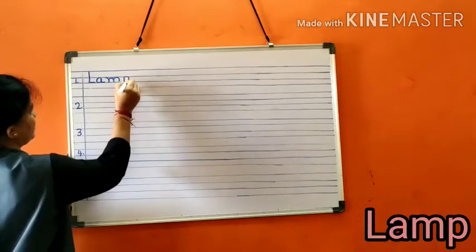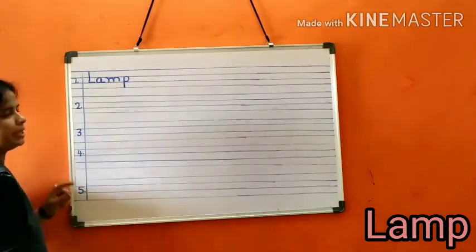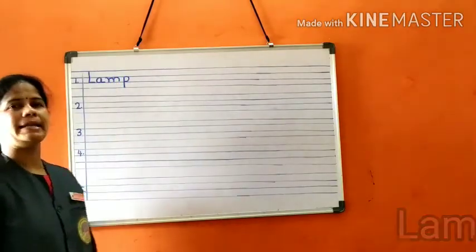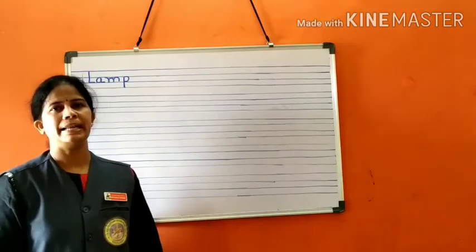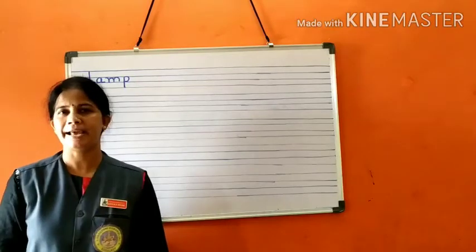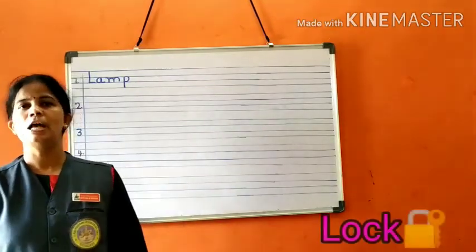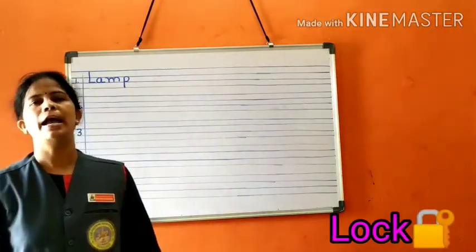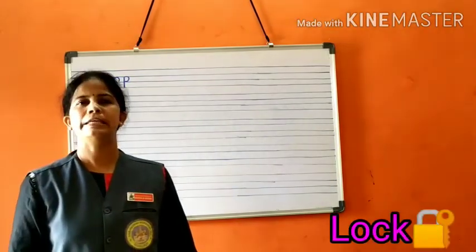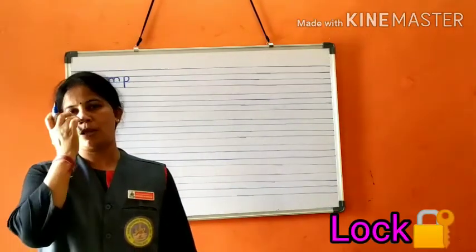What is the spelling of lamp children? L-A-M-P, lamp. The next word is lock. L-O-C-K, lock.